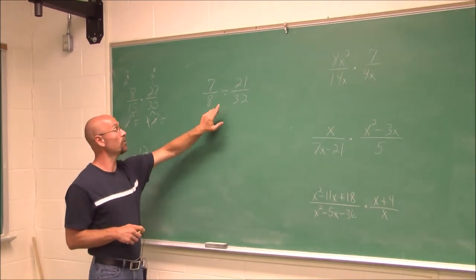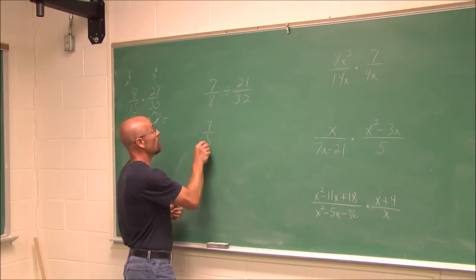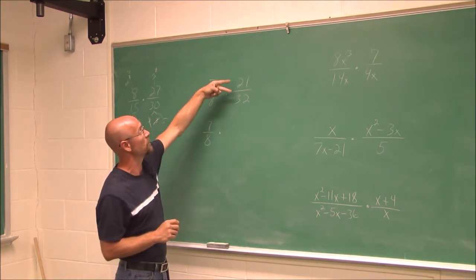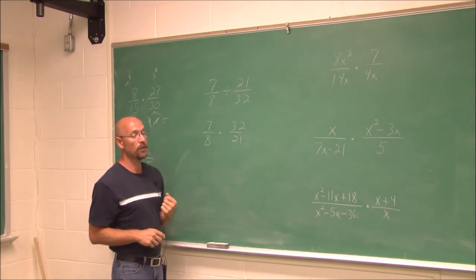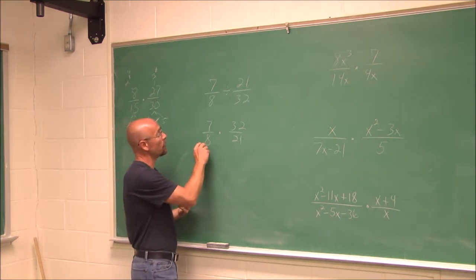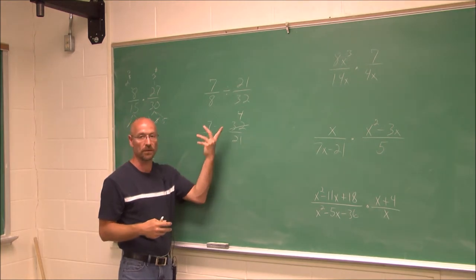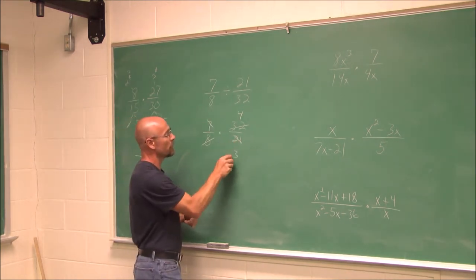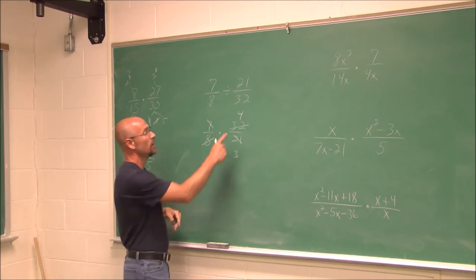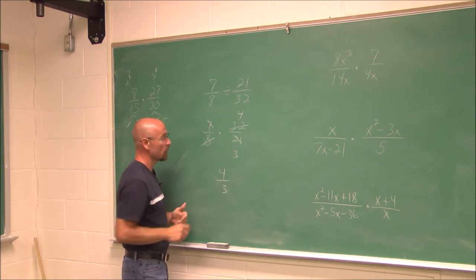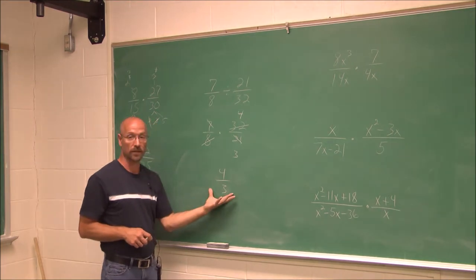For division of fractions, we recall that dividing by a fraction means multiplying by its reciprocal — we flip the second fraction. For example, 7 eighths divided by 21 thirty-seconds becomes 7 eighths times 32 over 21. Then 8 goes into 32 four times, and 7 goes into 21 three times, reducing to 4 thirds.